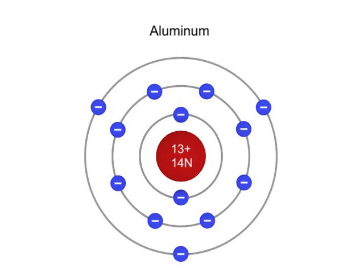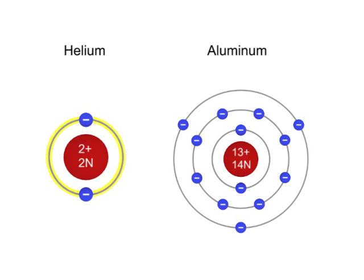The two electrons nearest the nucleus occupy the first shell. The first shell can contain only two electrons. Unlike the helium atom with its single shell around the nucleus, the aluminum atom will need additional shells to accommodate its additional electrons.